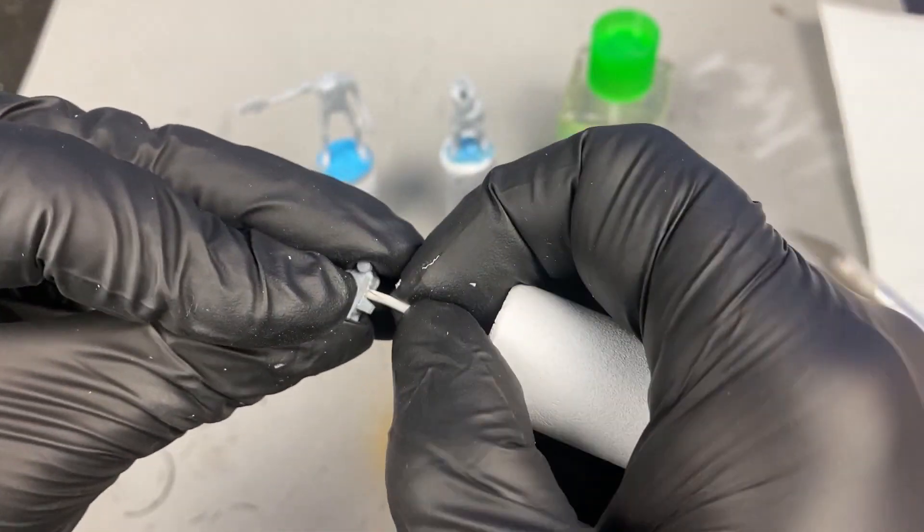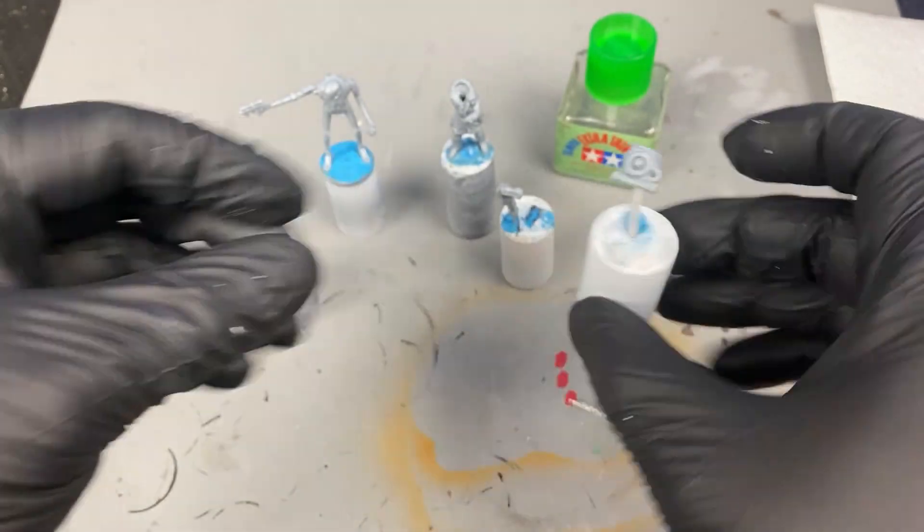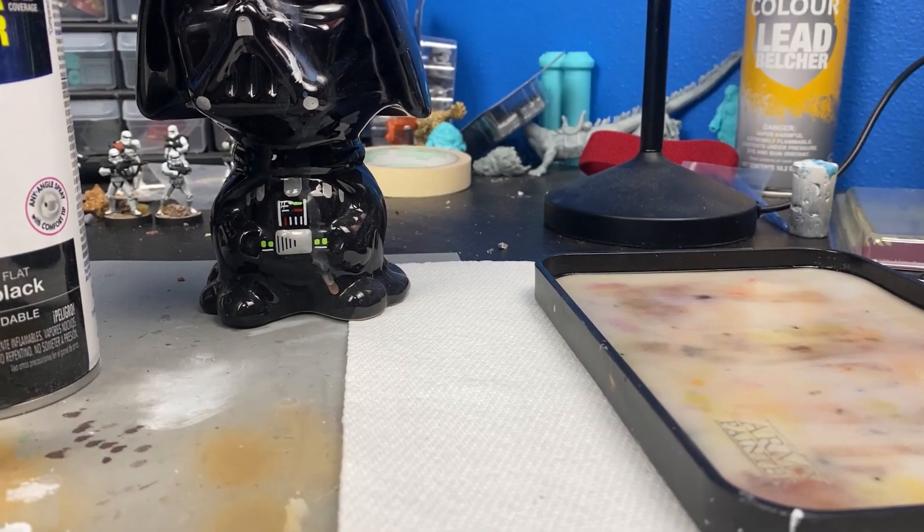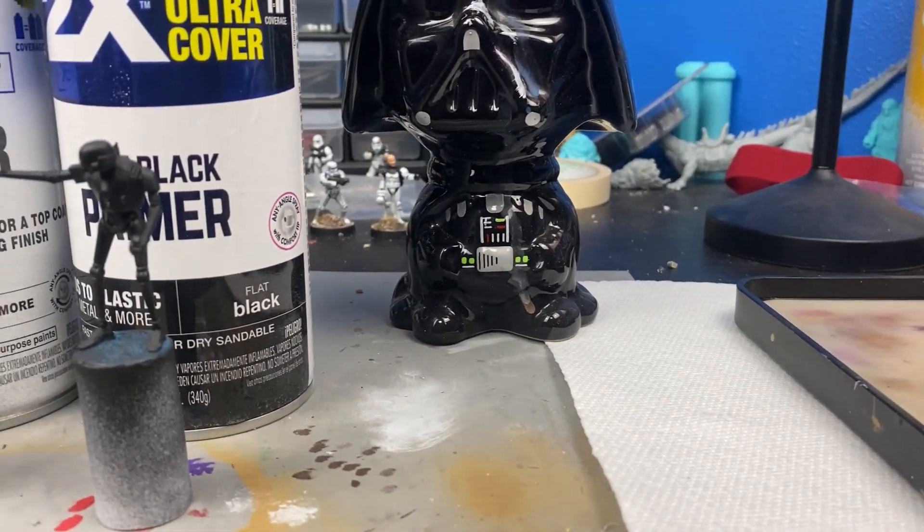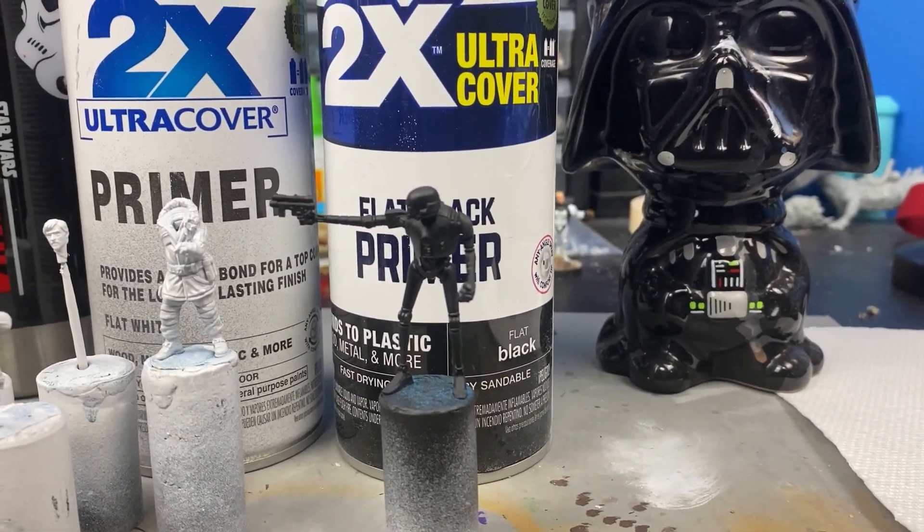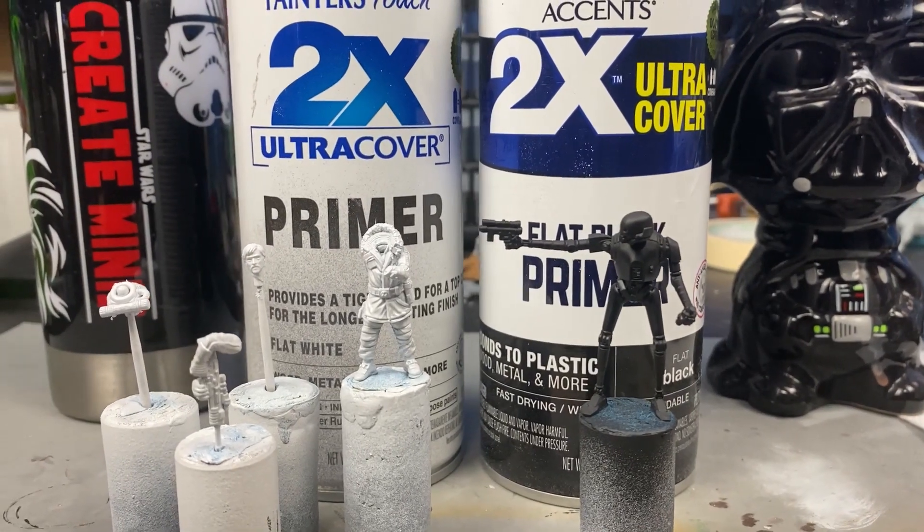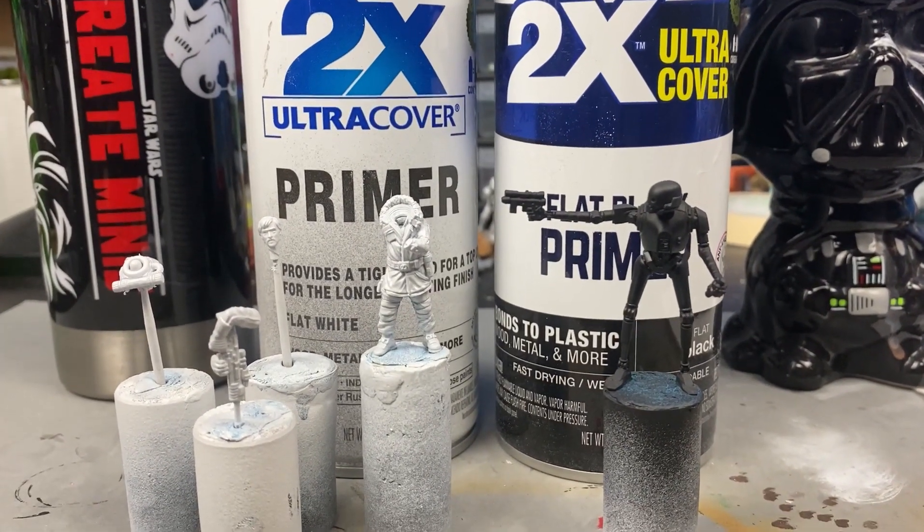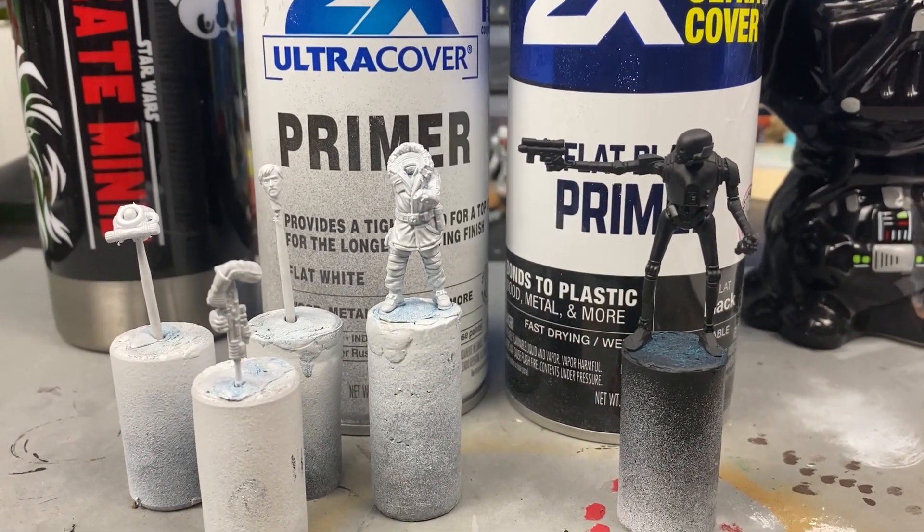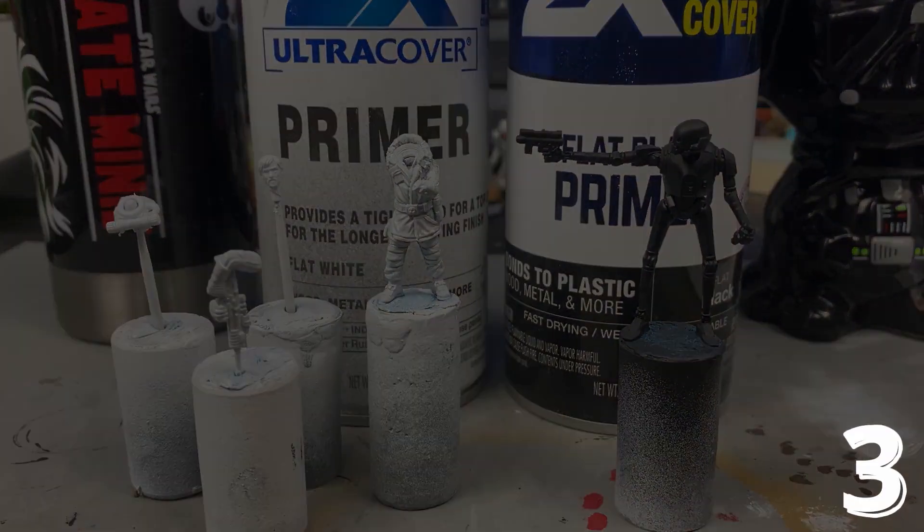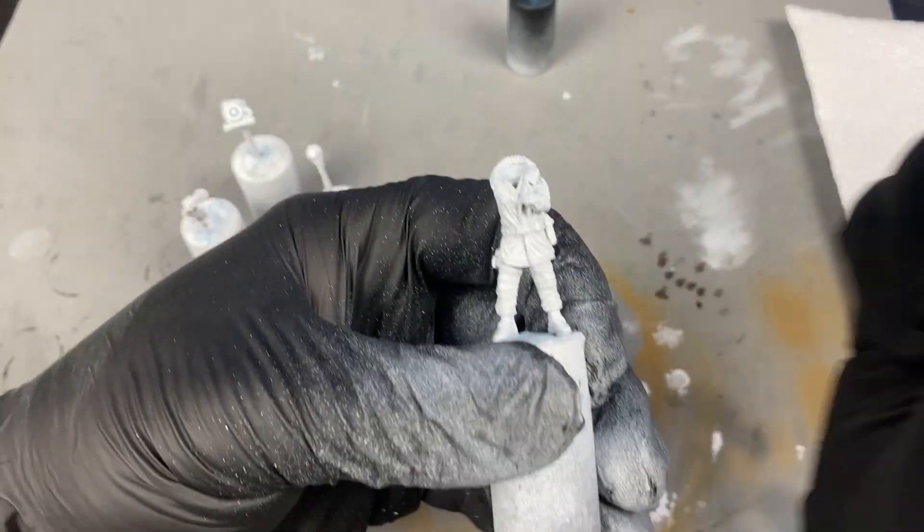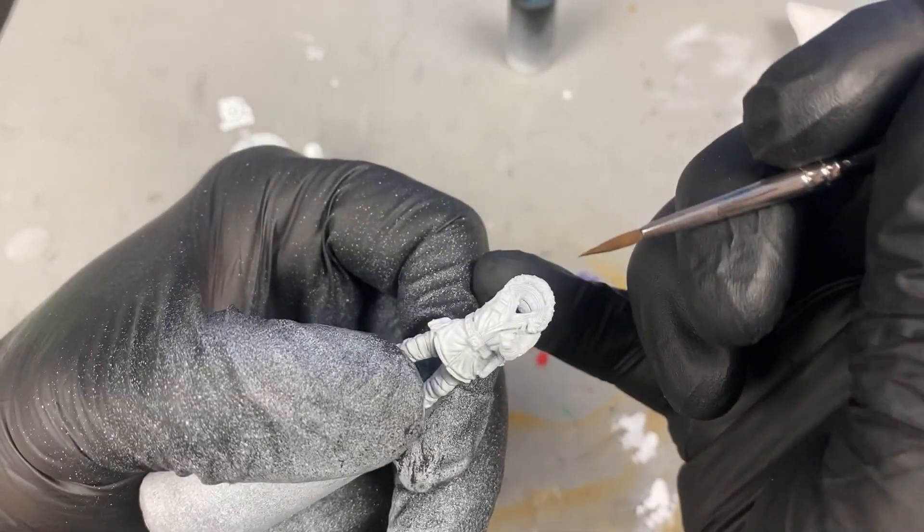And now we're ready to prime. For primer, I used the Rust-Oleum Matte Black and Flat White, black for K2 and white for all the rest. It's a cheap primer you can pick up at a hardware store, but it works great. It has great coverage and always puts a smooth finish. I tried a couple different primers, but found there was a 97.6% chance of failure.